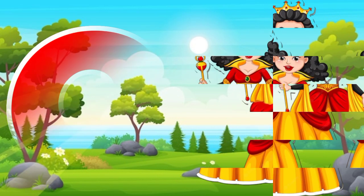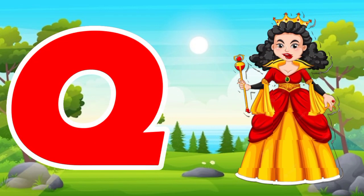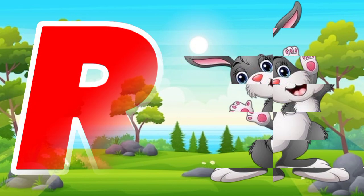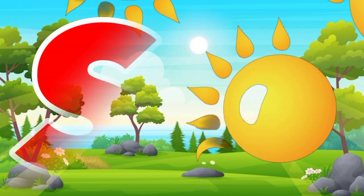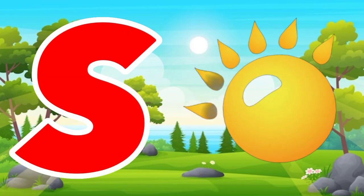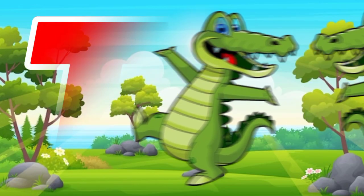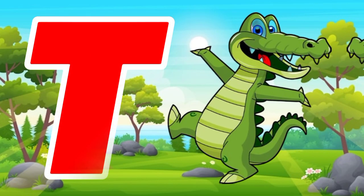Q is for queen, q-q-queen. R is for rabbit, r-r-rabbit. S is for sun, s-s-sun. T is for toad, t-t-toad.